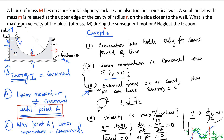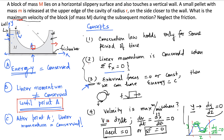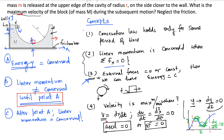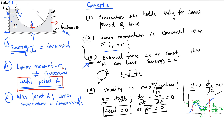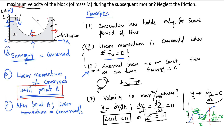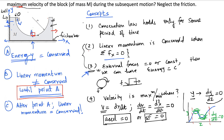The problem asks for the maximum velocity of the block. Maximum velocity of the block will occur when acceleration is zero, or equivalently when the sum of all forces is zero. Let's label the starting position as O, the bottom of the cavity as A, and some later position as B.